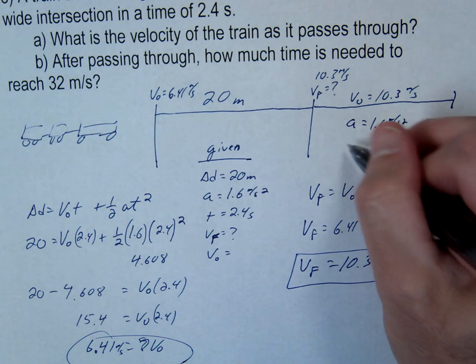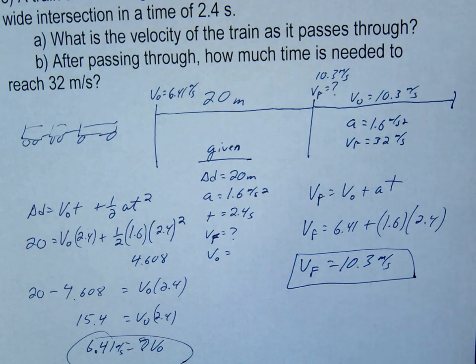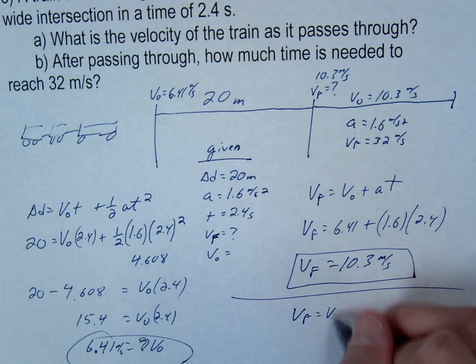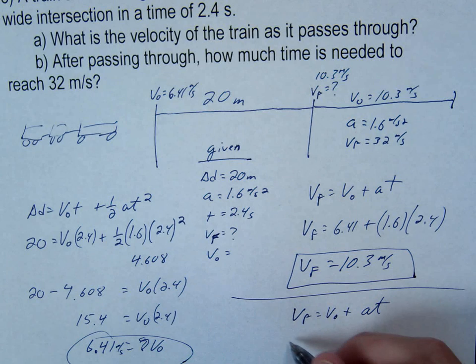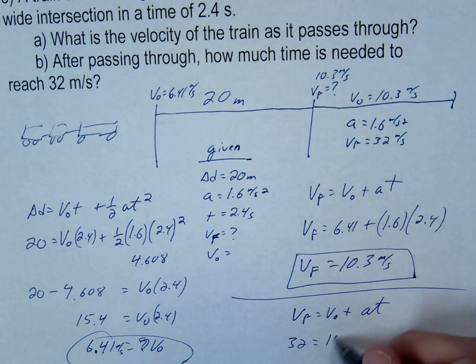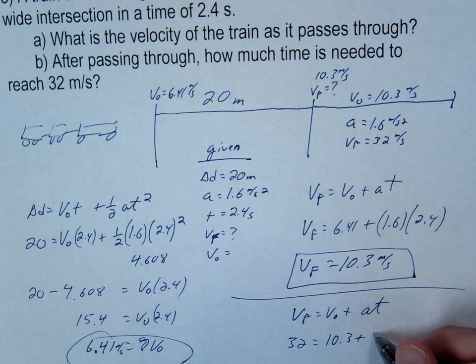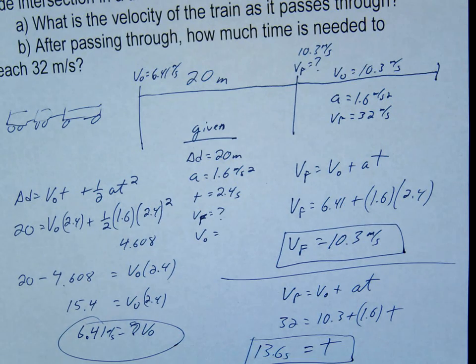And we want to know V final this time, 32. So, this second part, part B, is not really that hard. Just got to realize we're doing the second half of this journey. So, I think we can use the same one. V final plus A T. So, V final, 32. V initial, 10.3. Plus a, 1.6. Times T.